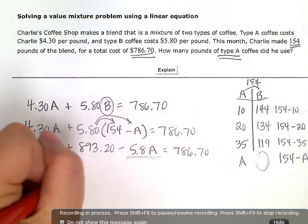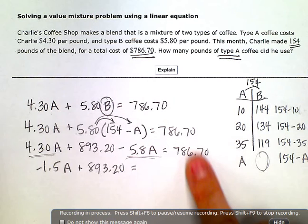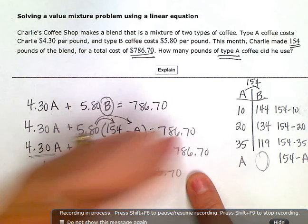So I'm going to combine those like terms. So 4.3 minus 5.8 is negative 1.5A. And then I have this constant term with no variable on it. So plus 893.20 equals, I still have this 786.70 on the right side.